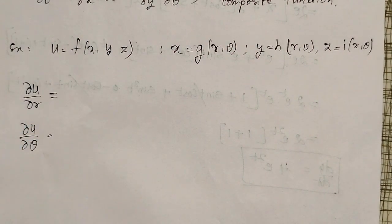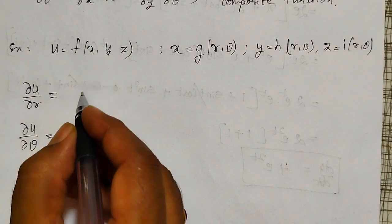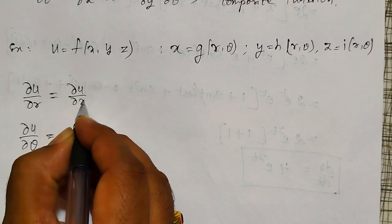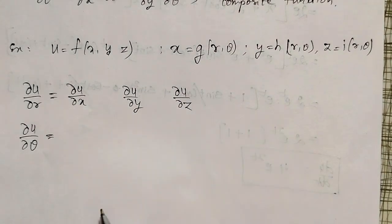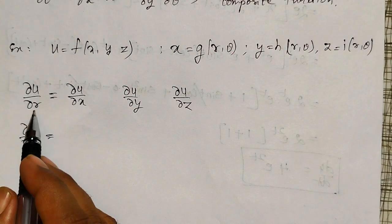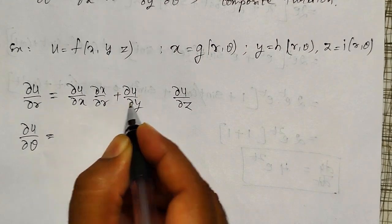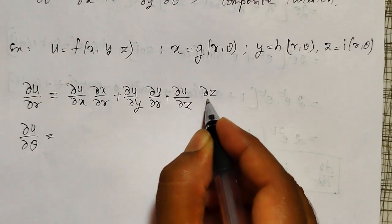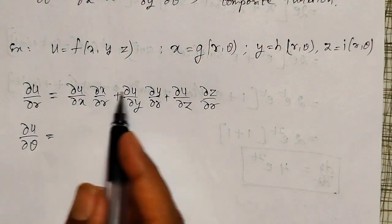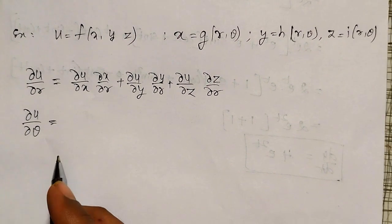To define ∂u/∂r and ∂u/∂θ: first, u is a function of x, y, z so three partial derivatives exist — ∂u/∂x, ∂u/∂y, and ∂u/∂z. But I want the partial derivative with respect to r, so by the chain rule: ∂u/∂r = (∂u/∂x)(∂x/∂r) + (∂u/∂y)(∂y/∂r) + (∂u/∂z)(∂z/∂r). Similarly I can write for ∂u/∂θ as well.